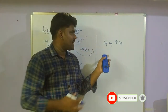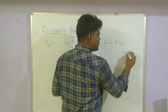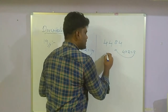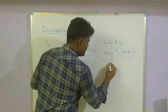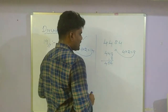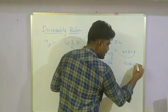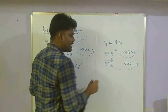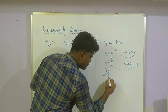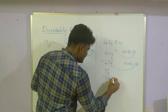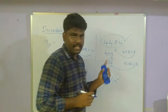One more example for rule 19. Take the units place: 4. Multiply by 2: 4 × 2 = 8. Add 8 to the remaining digits: 448 + 8 = 456. Again take the units place: 6 × 2 = 12. Add 12 to the remaining: 45 + 12 = 57. 57 is divisible by 19, so the entire number is divisible by 19.